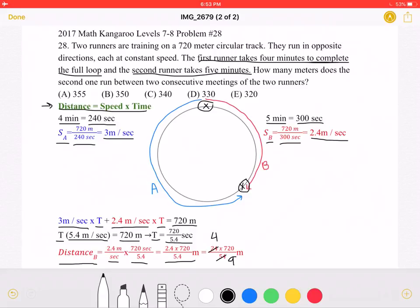And we know that 720 is equal to 80 times 9. So we can divide by 9 on top and bottom and get a total of 4 times 80, which is equal to 320 meters.